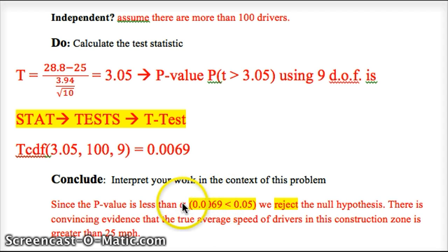So that's a very small percent of the time. That means if the true value is 25 miles per hour, only 0.69% of the time would we get 28.8 as our average, with a sample size of 10. So there's convincing evidence that the true average speed of drivers in this construction zone is greater than 25 miles per hour. So you'd reject the null hypothesis.